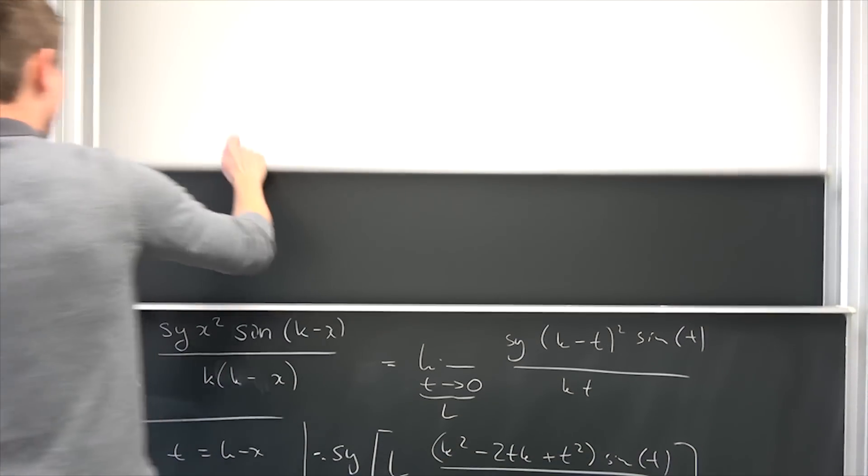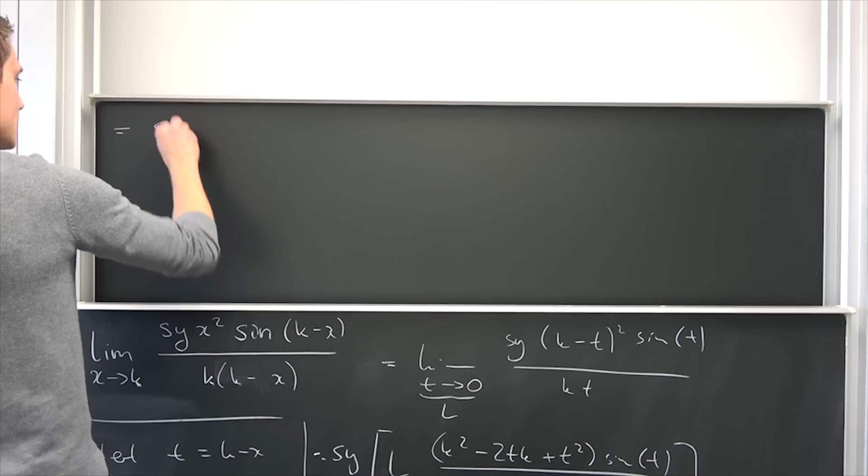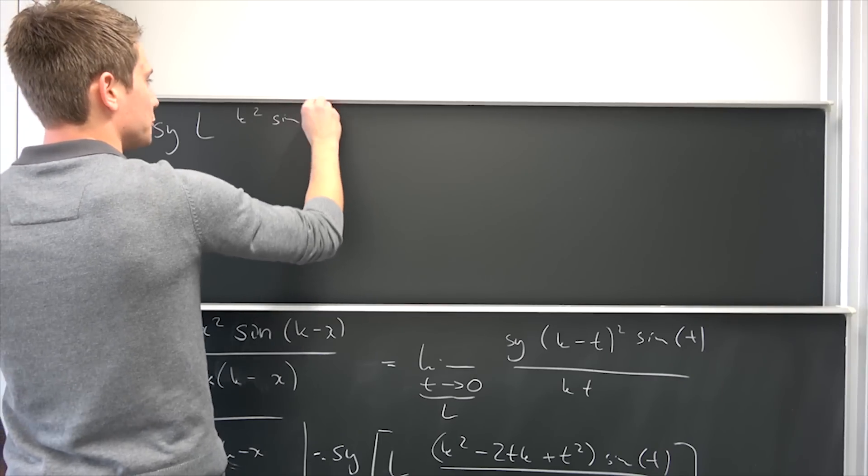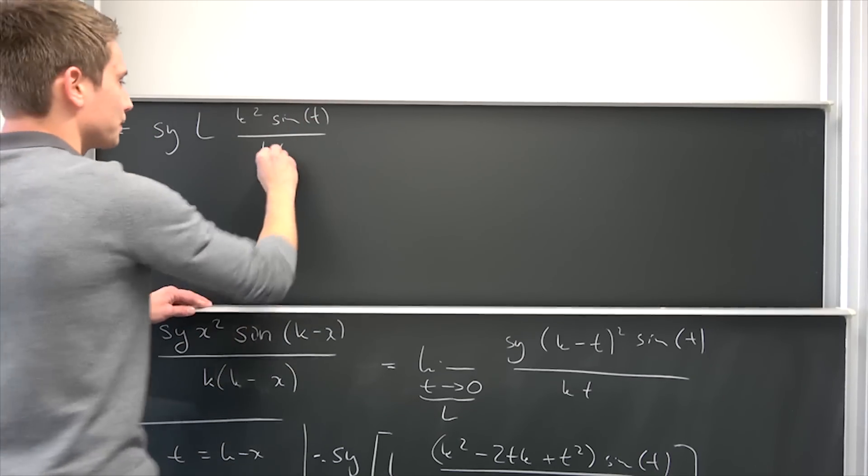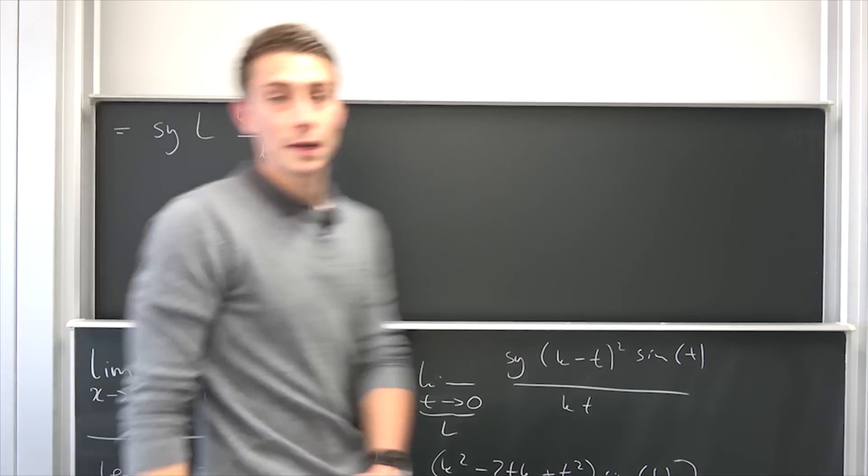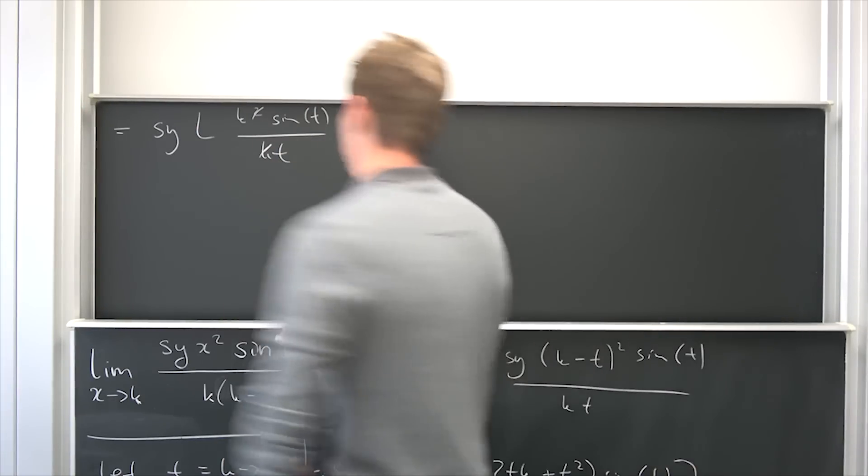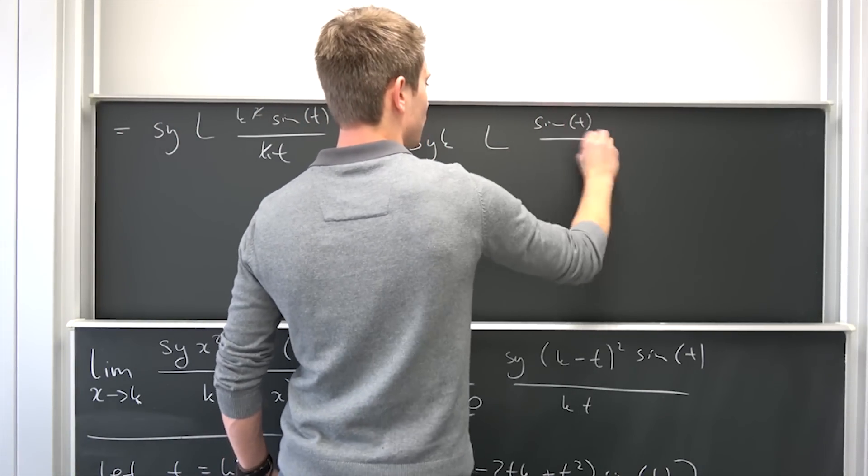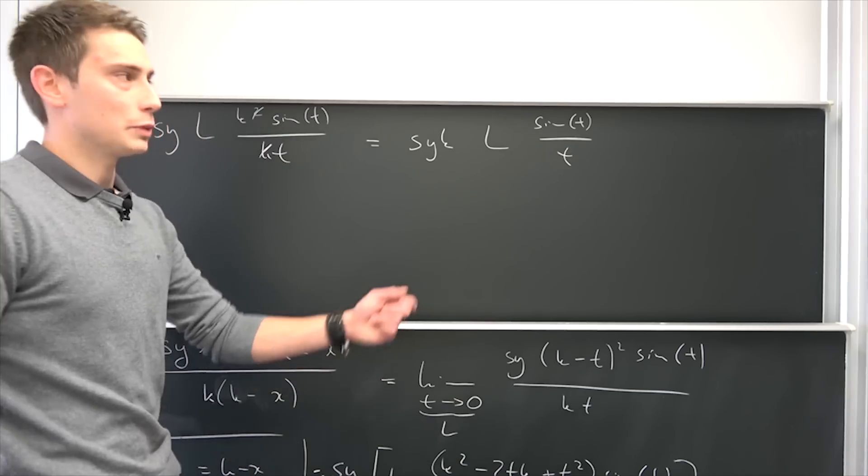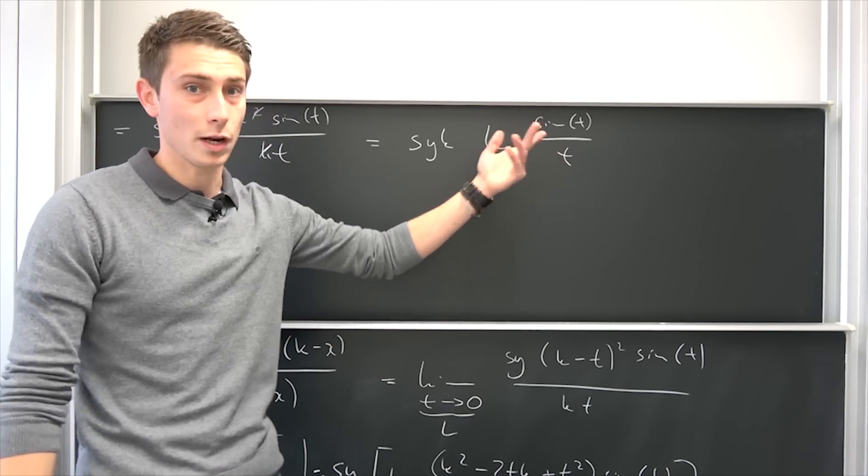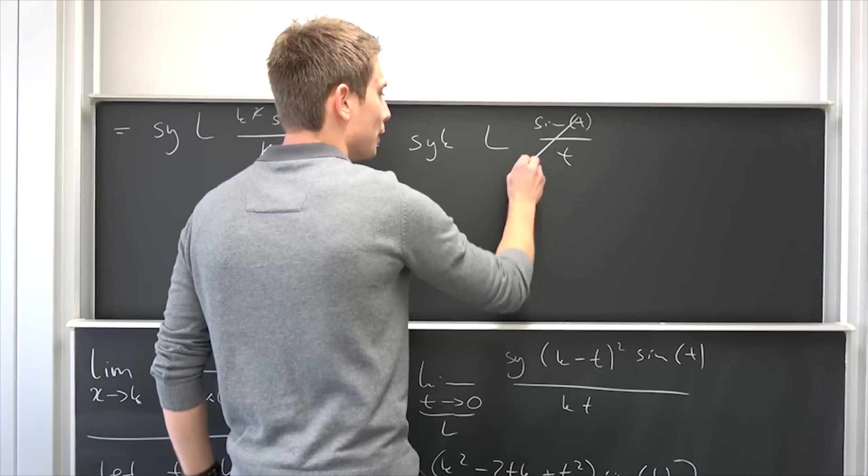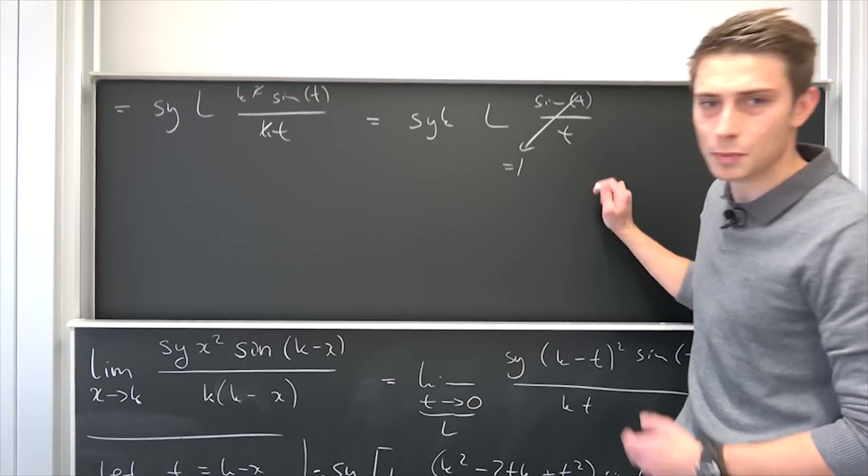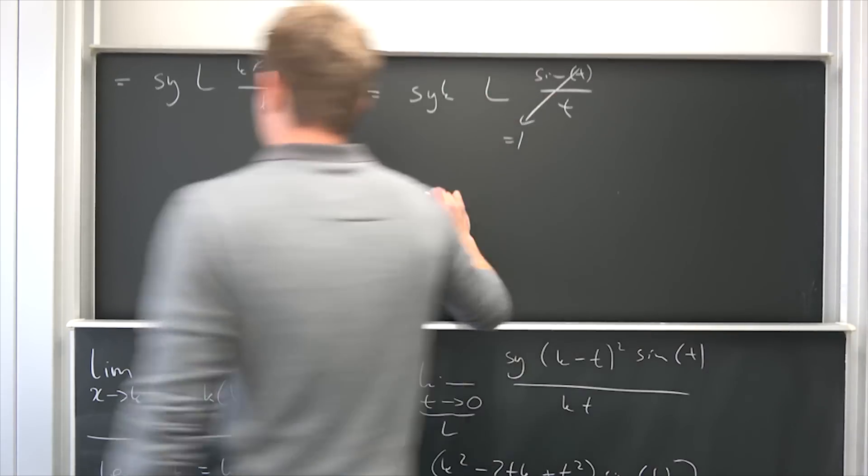So now we have just s times y times the limit as t approaches 0 of k squared sine of t over k times t. One of the k's is going to cancel out, and we can bring this k to the outside. So we have k times the limit of sine of t over t. I'm not going to derive this, just use the Taylor series. But this limit right here is well known as t approaches 0, this is going to go to 1 in the limit. I can derive it, it's really quite easy in many different ways, but we are going to take it for granted. And our limit at the moment, since those are just real numbers, is that we have as the limit s times y times k.